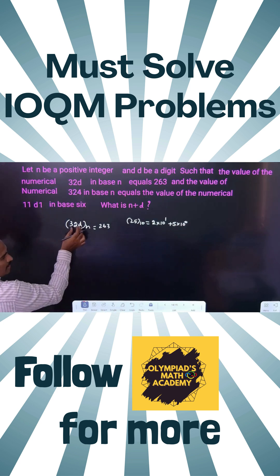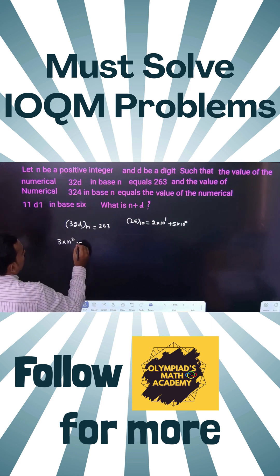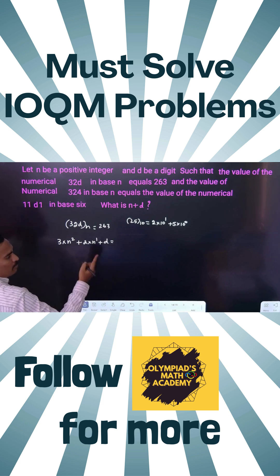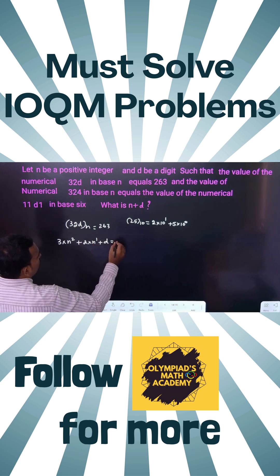The same way here, three digits there, you reduce by 1. 3 times n squared. Here you start from base n, so 2 times n to the power 1 plus d times n to the power 0, which equals 263.